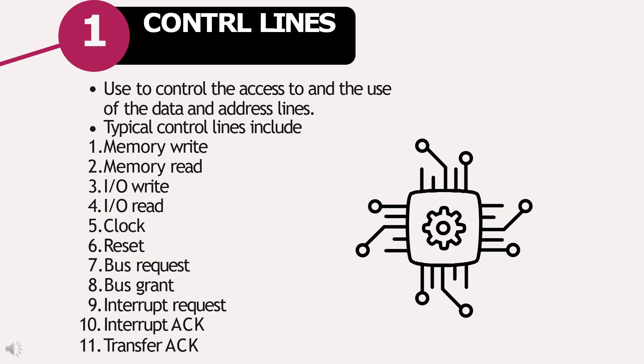The control lines are used to control the access to and the use of data and address lines. Some typical control lines include memory write, memory read, input-output read or input-output write, clock reset, bus request, bus grant, interrupt request, interrupt ACK, transfer ACK, etc.